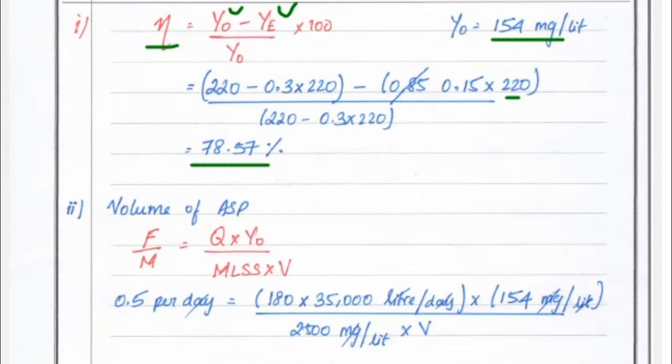Volume of ASP: F divided by M, that is food per microbial mass. Food equals Q times Y0 and M equals MLSS times V. So F divided by M equals 0.5 per day. Q equals 180 times 35,000 into Y0 value 154, divided by MLSS 2500. We got the value of volume 776.16 meter cube.